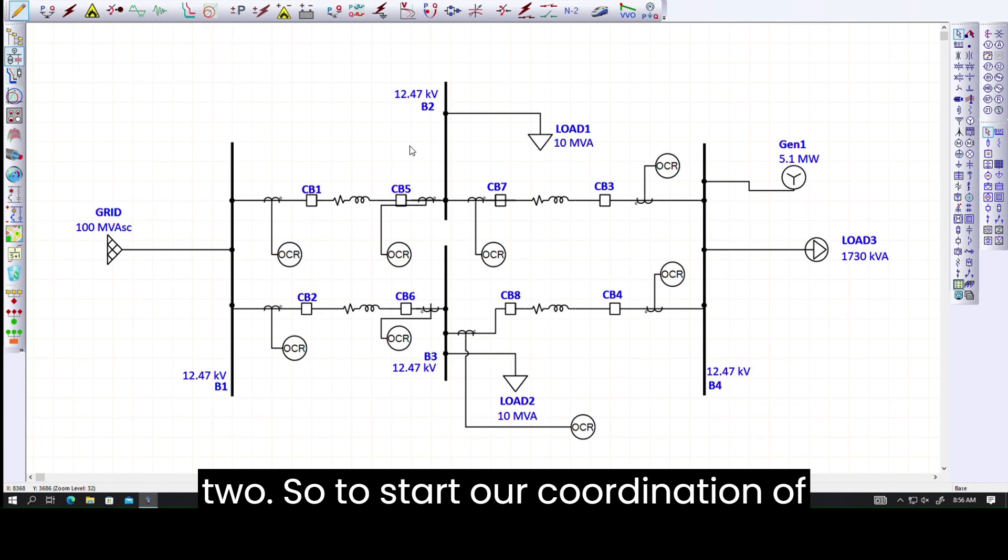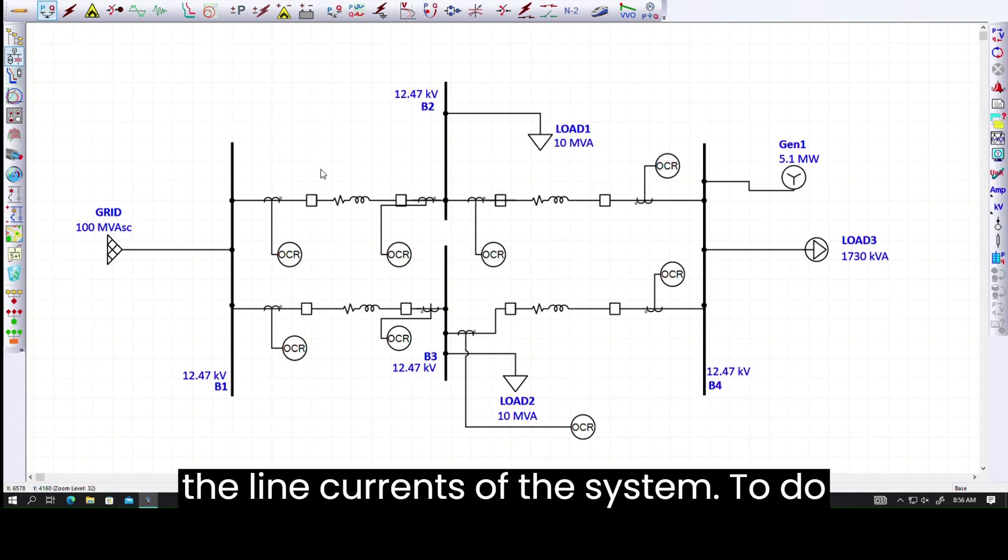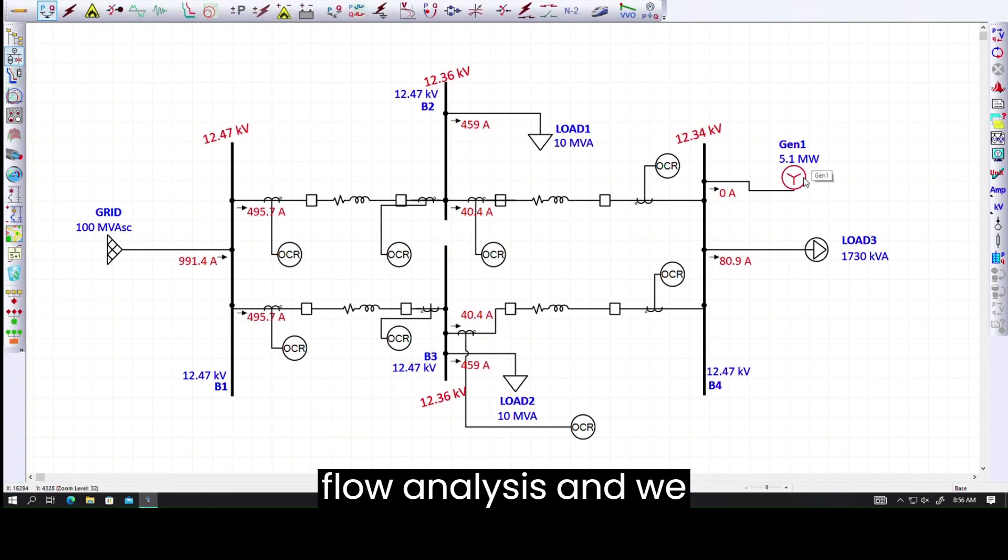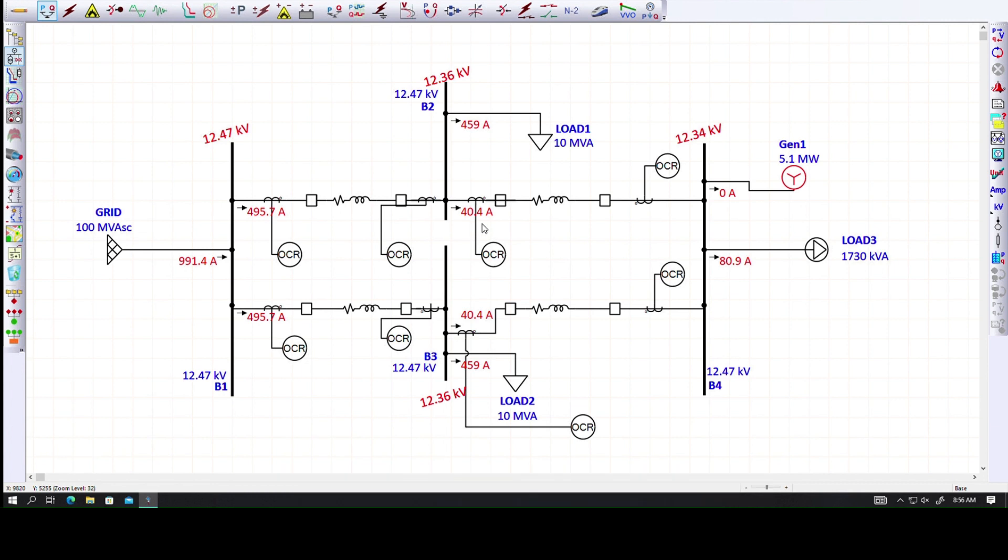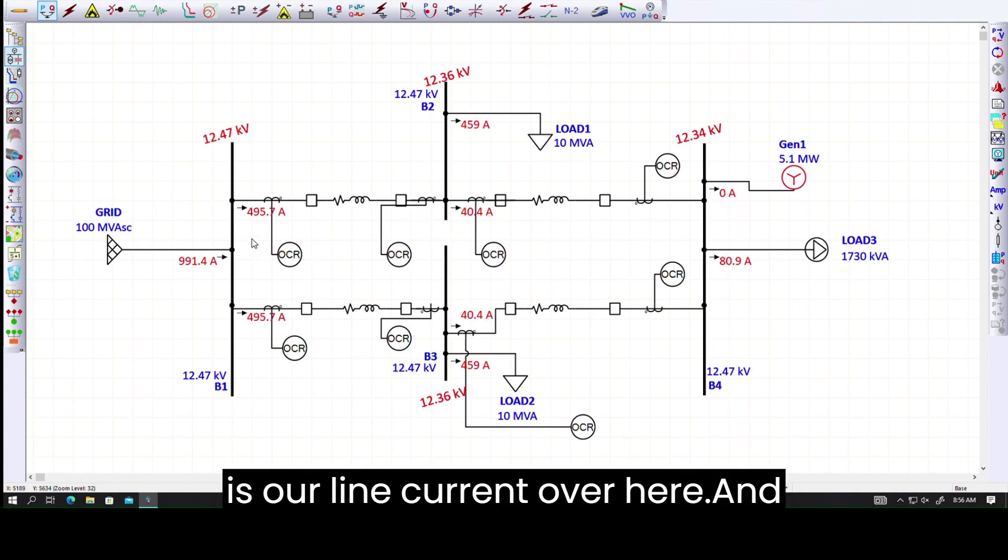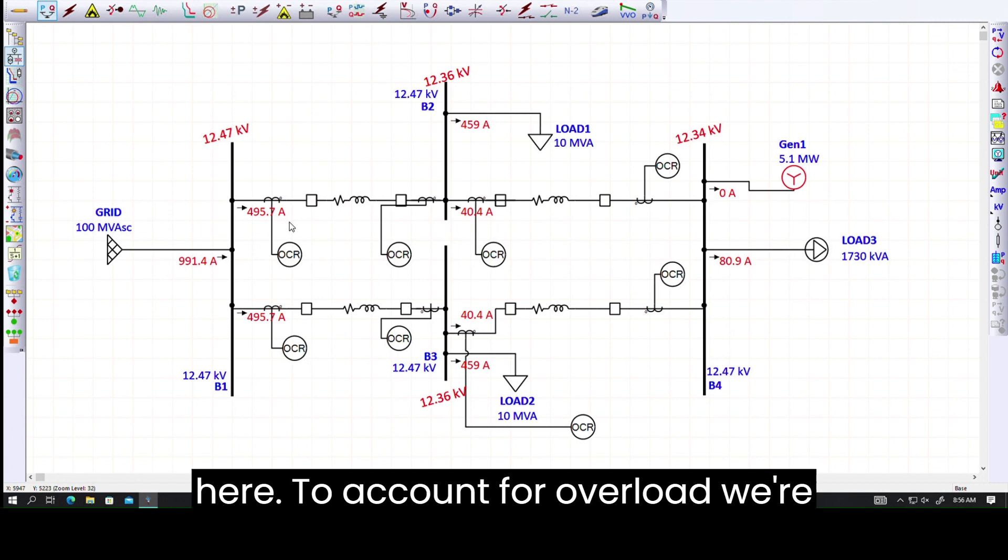To start our coordination of this loop system, we need to figure out the line currents of the system. To do that, we're going to run a load flow analysis and we determine that 40.4 amps is our line current over here and 495.7 amps is the line current over here.